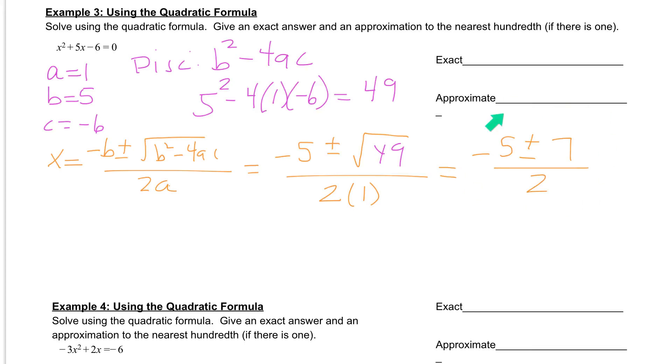So now what we're looking at is we have two answers that we need to keep going with. We have one where we're going to add the negative 5 and the 7. And we have one where we are going to subtract the negative 5 and the 7. So let's set up both of those problems. The first one is negative 5 plus 7 divided by 2. And our other one is negative 5 minus 7 divided by 2.